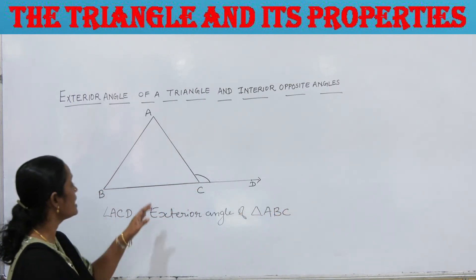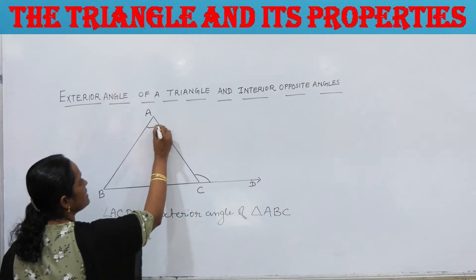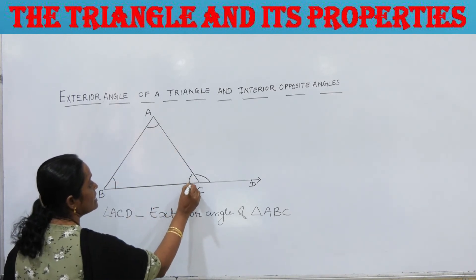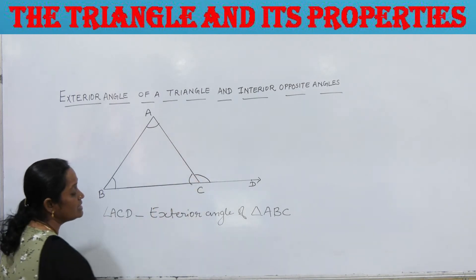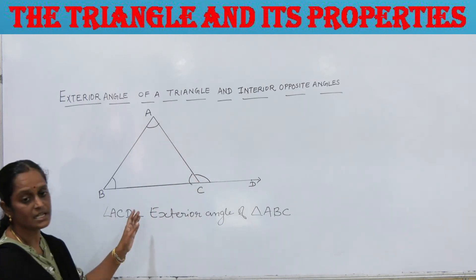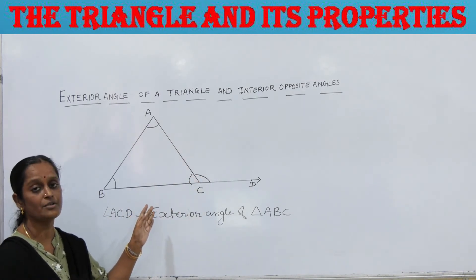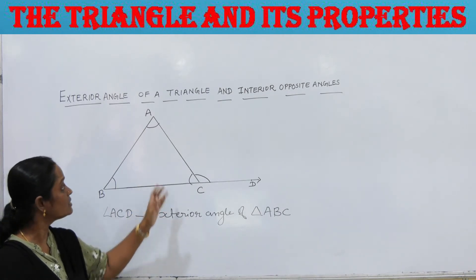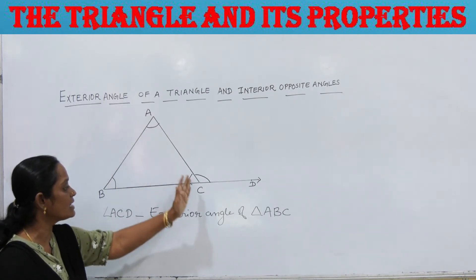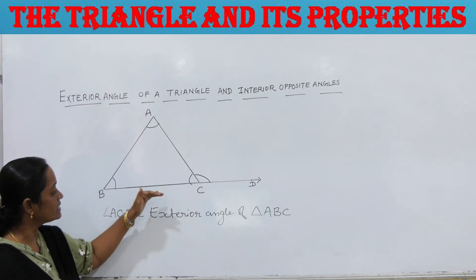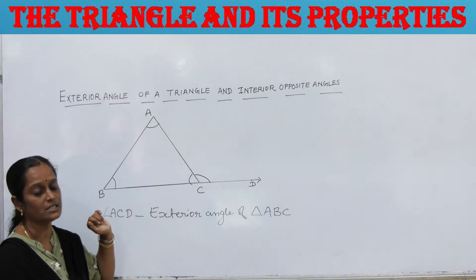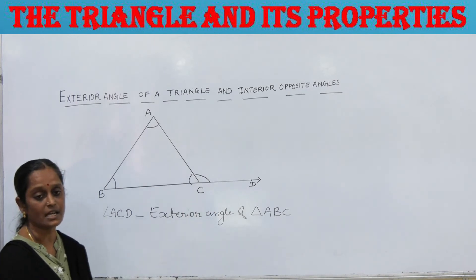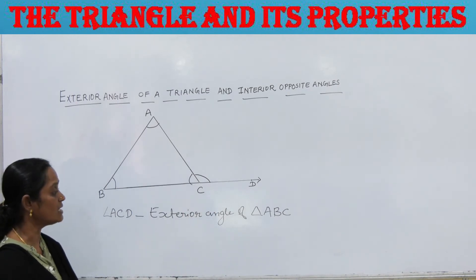Now here are angle A, angle B, and angle ACB. These are the interior angles of the triangle. A triangle has three interior angles: angle A, angle B, and angle ACB are the interior angles, and angle ACD is an exterior angle of triangle ABC.